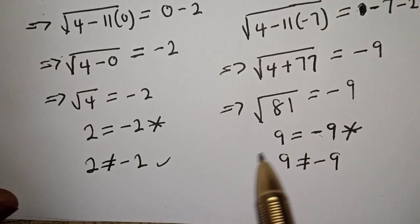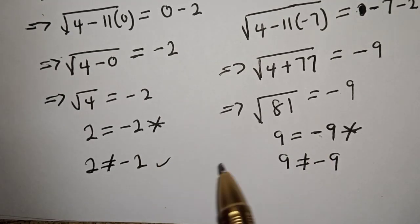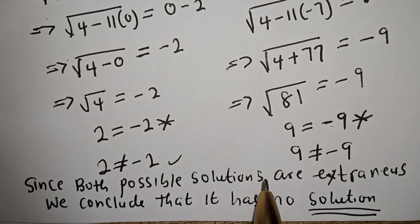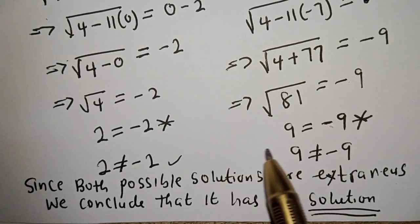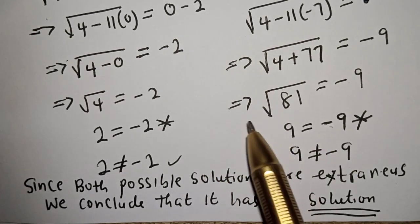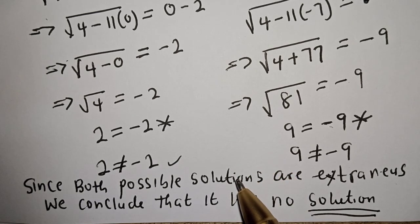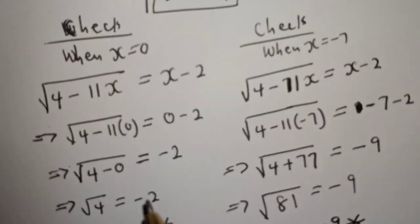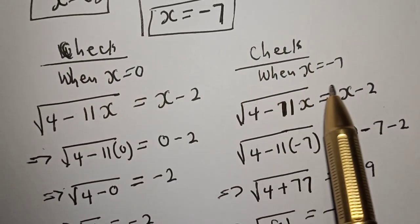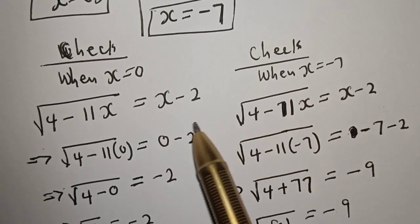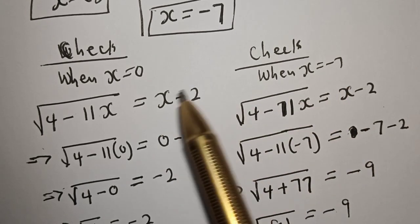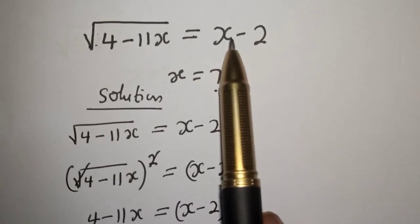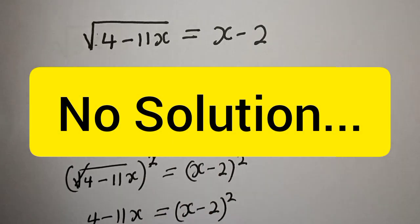Since both possible solutions are extraneous, we conclude that the equation has no solution. If you think you have a better solution or believe it does have a solution, kindly prove it in the comment section. When x equals 0 and x equals minus 7, both solutions are extraneous, so we conclude that the equation square root of (4 minus 11x) equals x minus 2 has no solution. If you enjoyed the class, please don't forget to like, share, comment, and subscribe. Thank you.